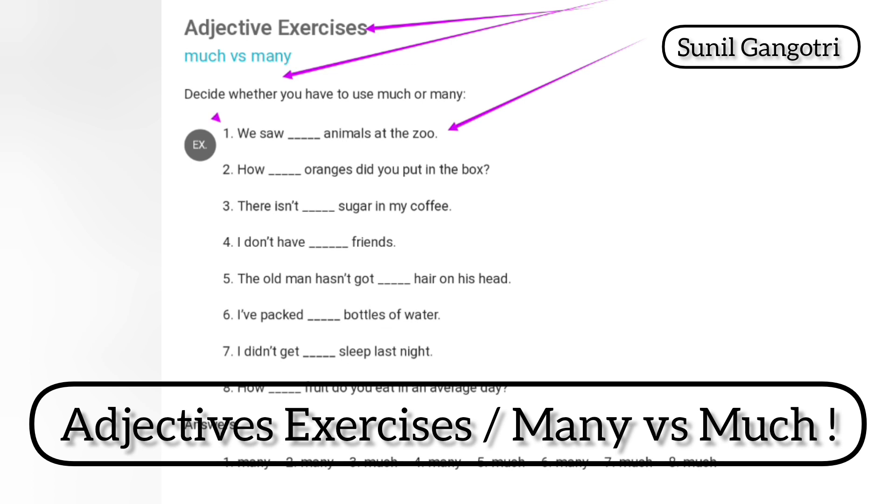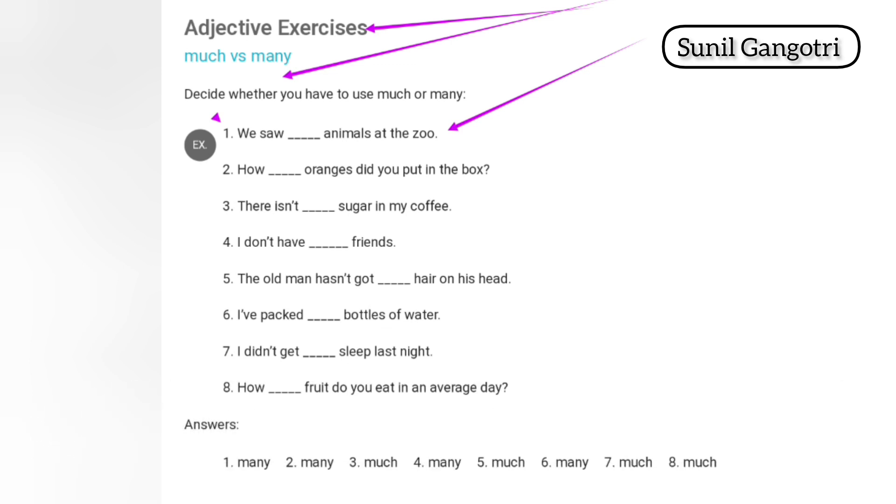First question: We saw blank animals at the zoo. Now correct answer: many. We saw many animals at the zoo.